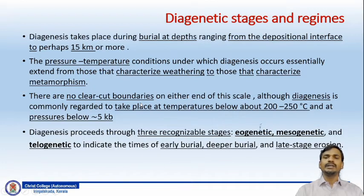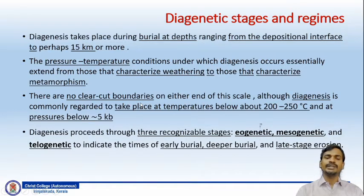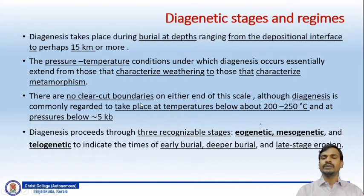The pressure-temperature conditions under which diagenesis occurs essentially extend from those that characterize weathering at surface conditions to those that characterize metamorphism. The lower limit of diagenesis would be the initial stage of metamorphism. There are no clear-cut boundaries on either end of the scale, although diagenesis commonly takes place at temperatures below about 200 to 250 degrees Celsius and associated pressures below 5 kilobar. Diagenesis proceeds through three recognizable stages: eogenetic, mesogenetic, and telogenetic.